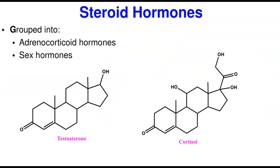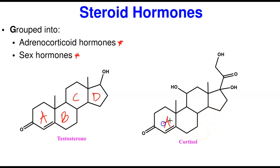Steroid hormones are those hormones that are derived from cholesterol, because cholesterol is the common basic starting point for the synthesis of all steroid compounds. They are categorized into two groups: the adrenocorticoids and the sex hormones. Good examples of sex hormones include testosterone, progesterone, and estrogen. Cortisol is a good example of an adrenocorticoid. All of them are derived from that basic ring system.